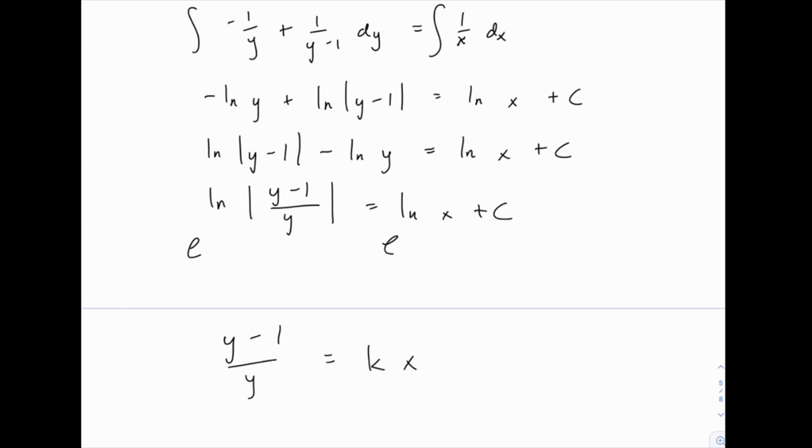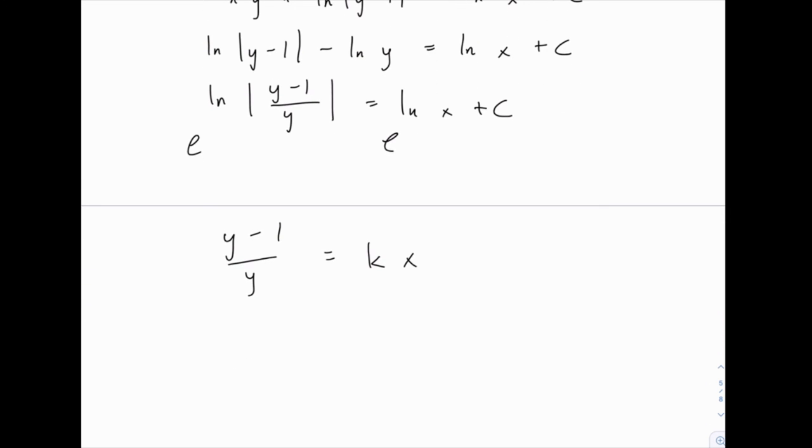And now you need a little bit more rearranging to solve for y, but notice that on the left side we can rewrite that as 1 minus (1 over y), and then if we rearrange we get 1 over y equals 1 minus kx.